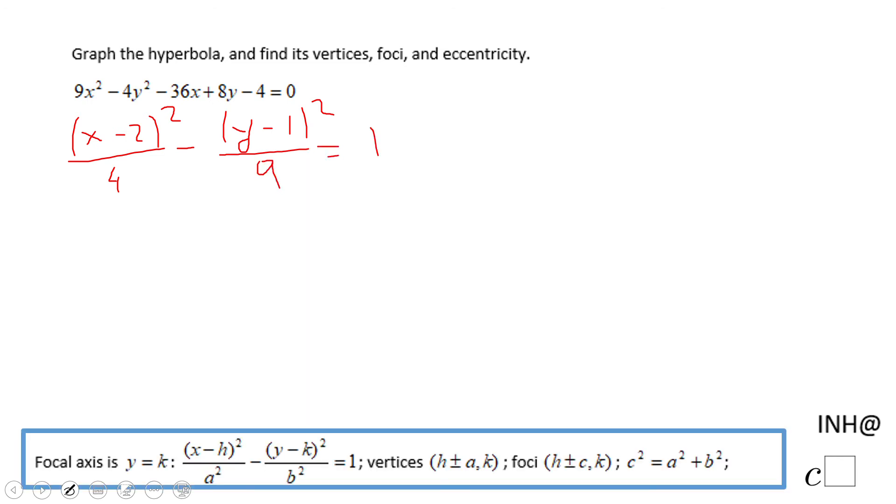And again, this form here is going to help us get the center. The center is (2, 1). Then, because we have this form like that, y = 1 is the focal axis, and (2, 1), that center, is on the focal axis.